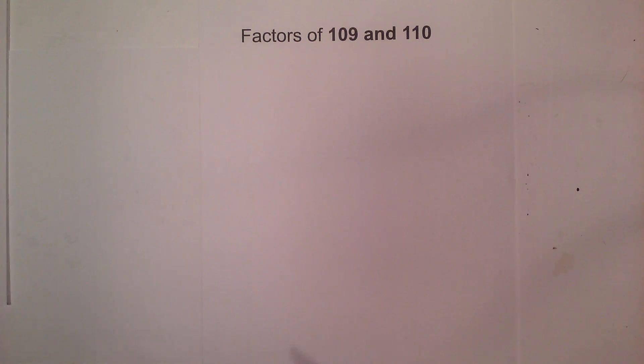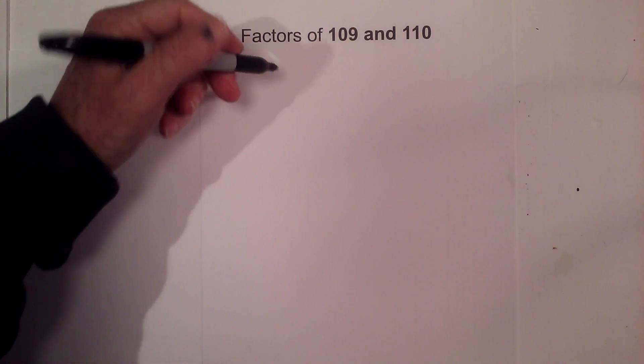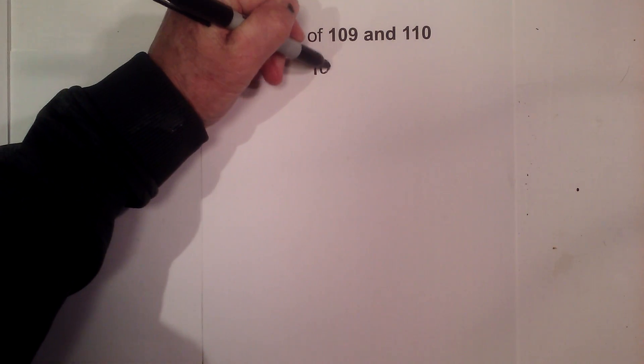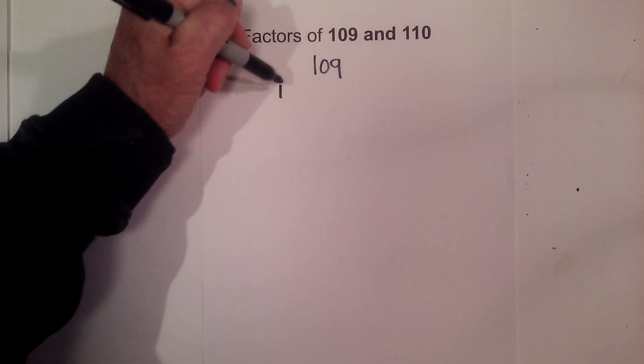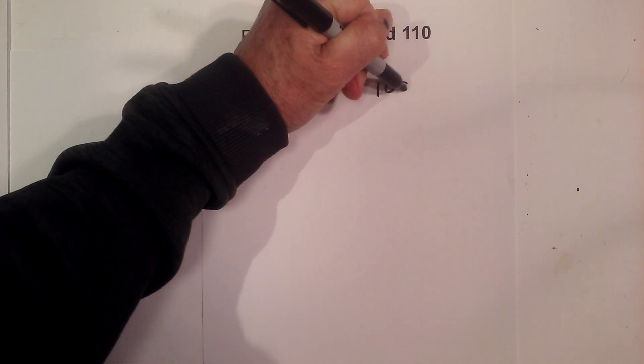Science and the factors of 109 and 110, and it will include prime factorization. 109, this will not take very long. The factors of 109: it is a prime number, so they are 1 and 109.